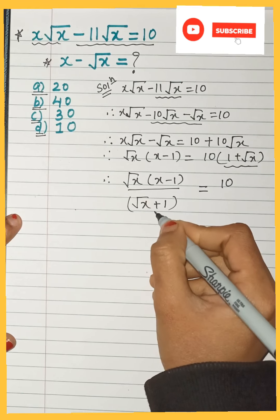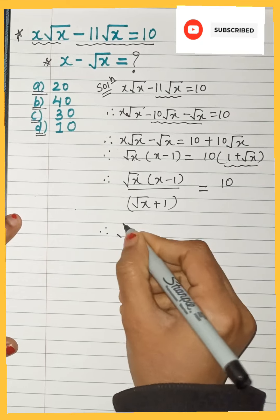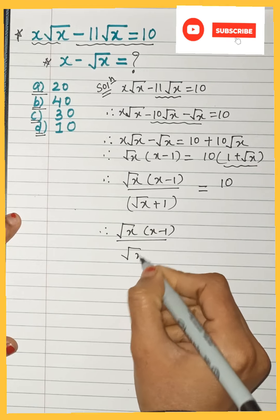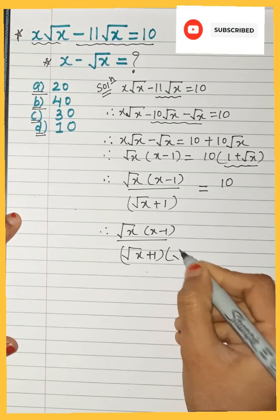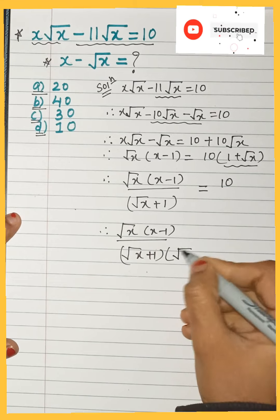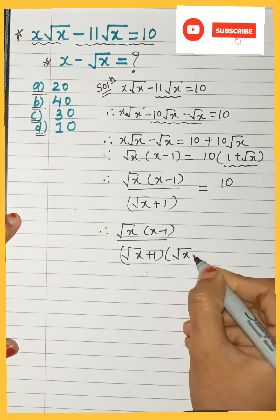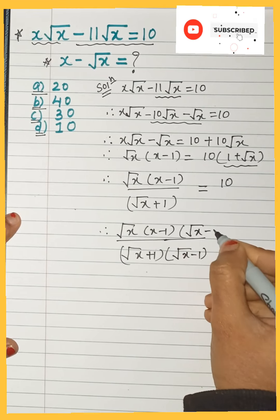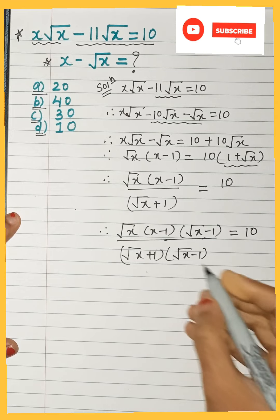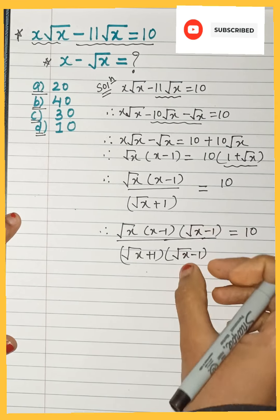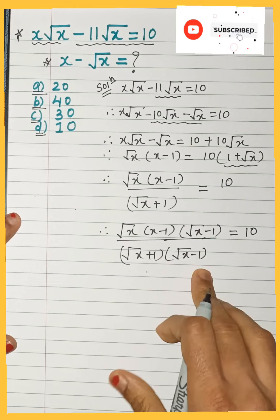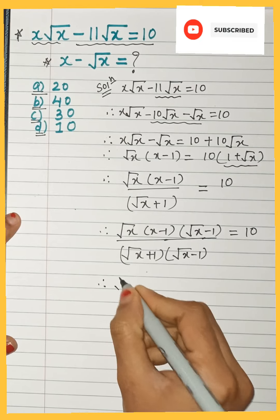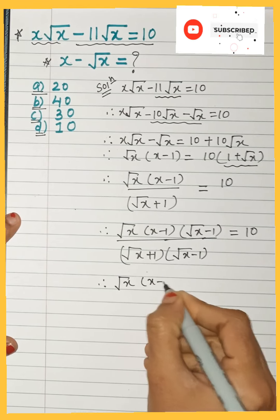To remove the root from the denominator we rationalize it. The denominator is √x + 1, so we multiply and divide by the conjugate term (√x − 1). This is rationalizing the denominator.